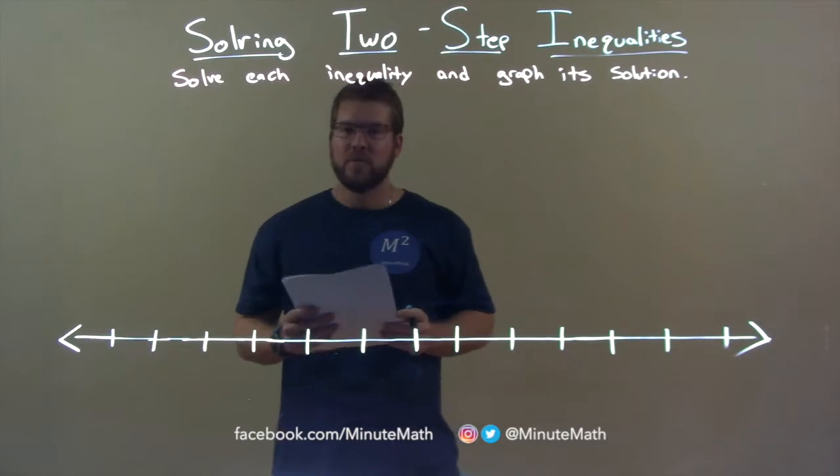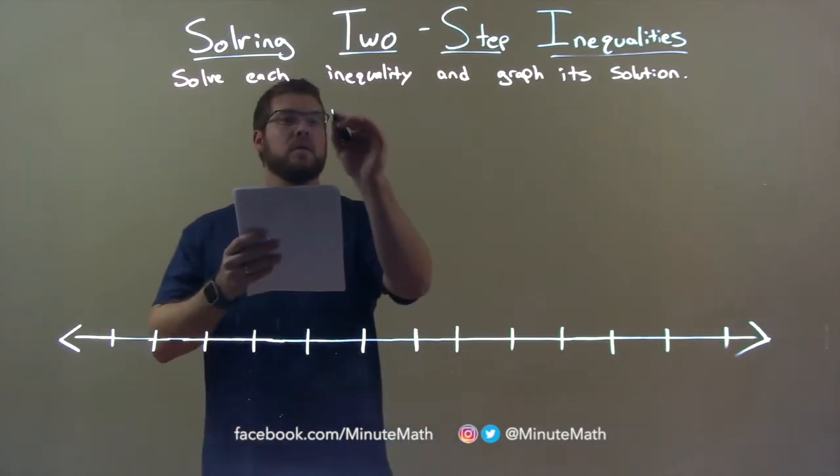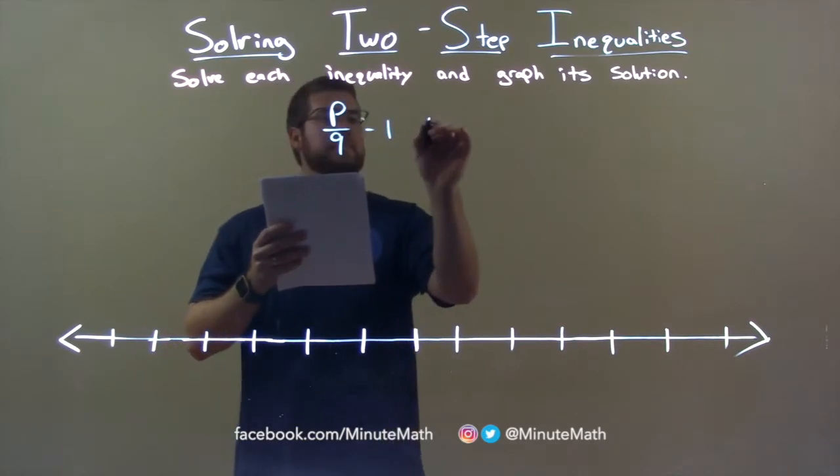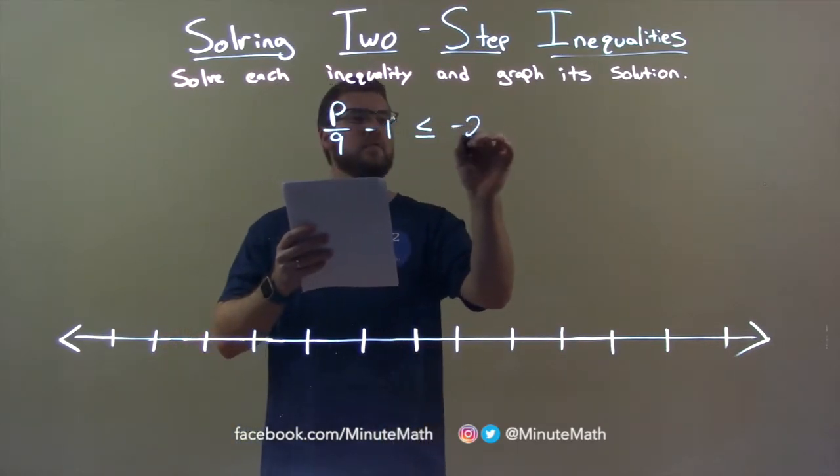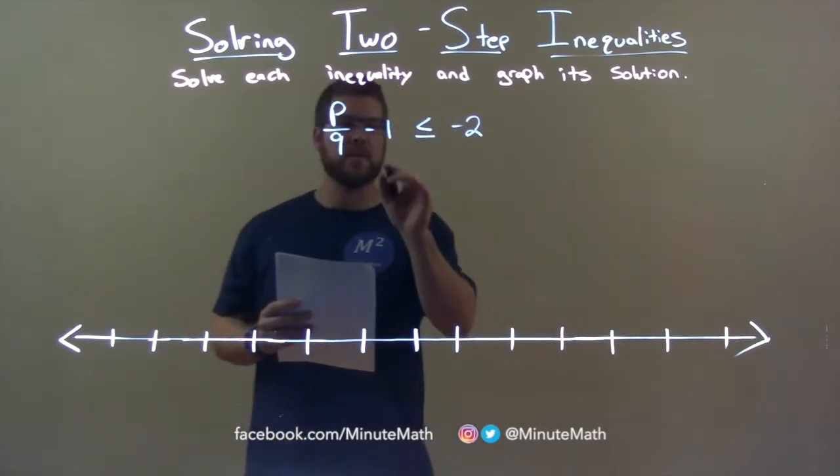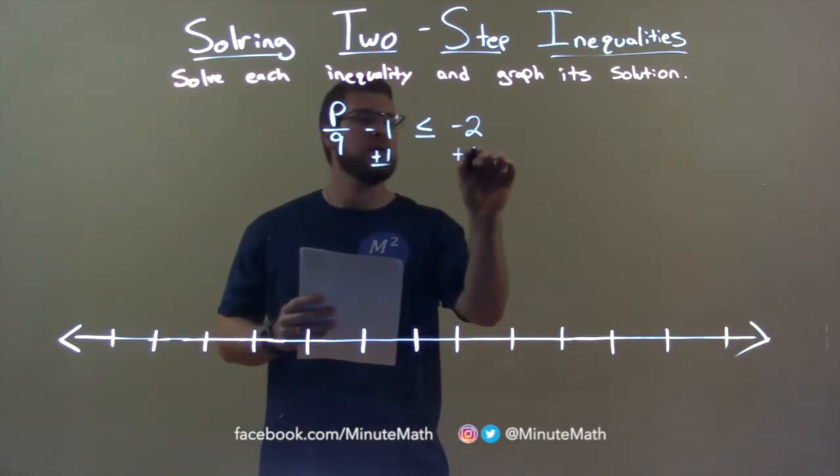Now, if I was given this inequality: P over 9 minus 1 is less than or equal to negative 2. I want to get P by itself. First step to do that, add 1 to both sides.